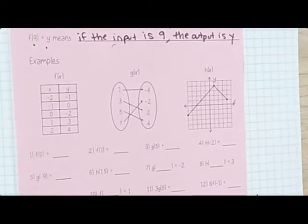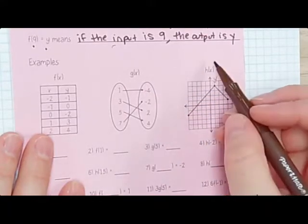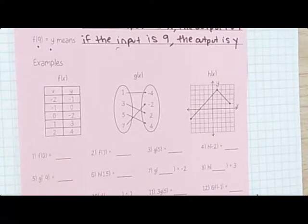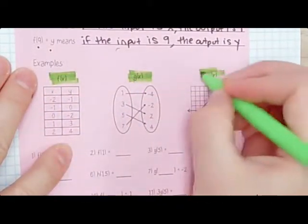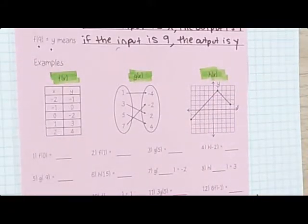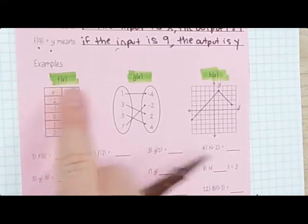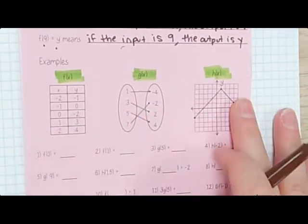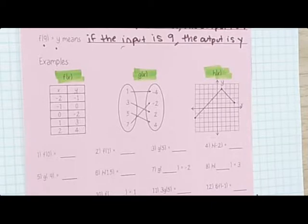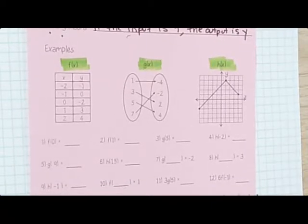So that's what function notation looks like. Let's do these examples. We have f of x as a table, g of x as a mapping, and h of x as a graph. We are going to find out: if the input is a certain number, what's the output?